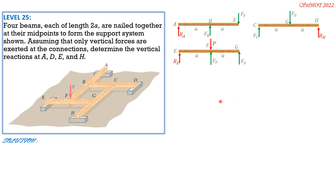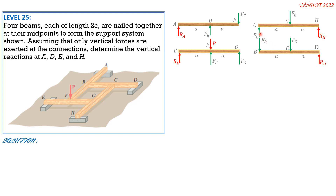For beam CGH: reaction R_H upward, nail force at G is downward (by action-reaction from EFG where it was upward), and nail force F_C is assumed upward. For beam BCD: nail force at B is downward (action-reaction from AFB where it was upward), nail force F_C is downward (action-reaction from CGH where it was upward), and reaction R_D is assumed upward.